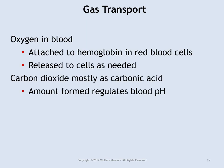Oxygen attaches to hemoglobin in red blood cells — that is what carries the oxygen. When it gets to the cellular level, the oxygen is released. Carbon dioxide exists primarily as carbonic acid when attached to the hemoglobin, and the amount of carbonic acid regulates blood pH, which is normally around 7.4.